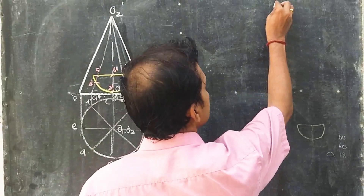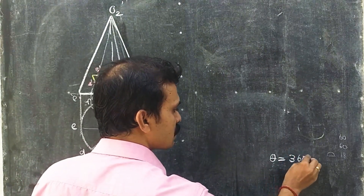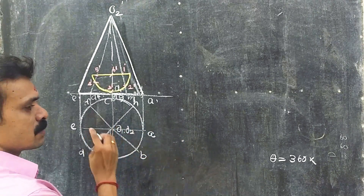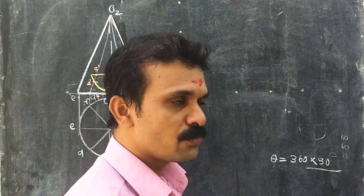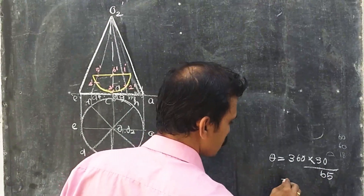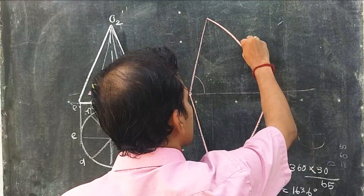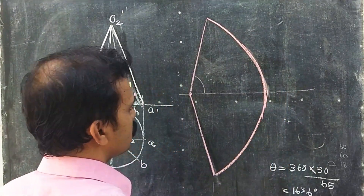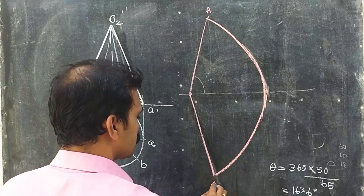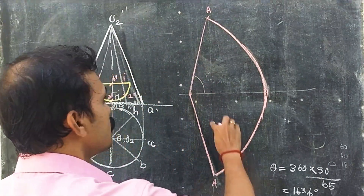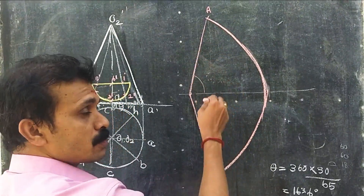Now we have to calculate theta. Theta is equal to 360 multiplied by radius r — the radius is 30 mm (diameter 60 mm) — divided by L, the length of the slant edge. On measuring, that value is 65. So theta comes out to approximately 166°. Divide this arc into 8 equal parts using a protractor, dividing the angle value by 8, and locate those points.